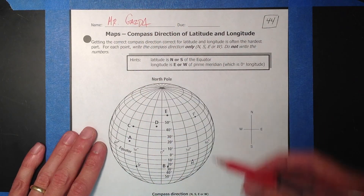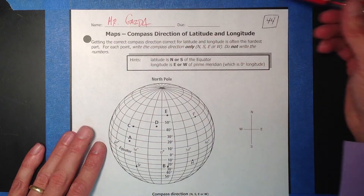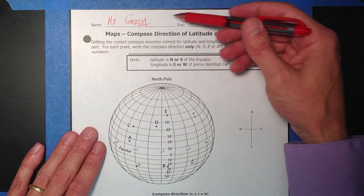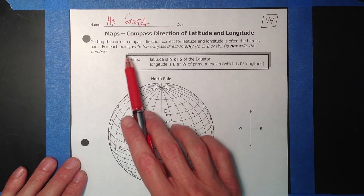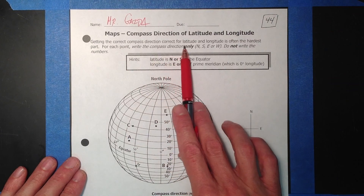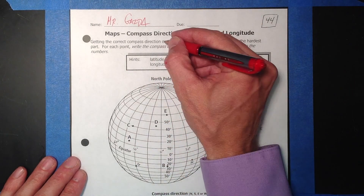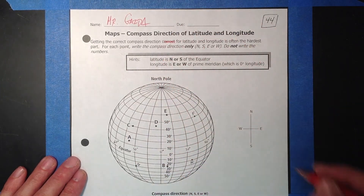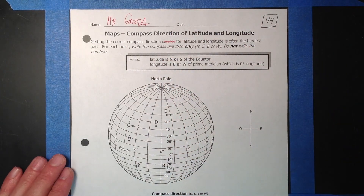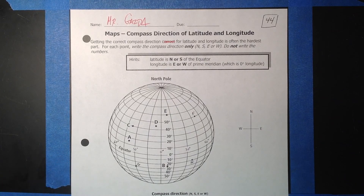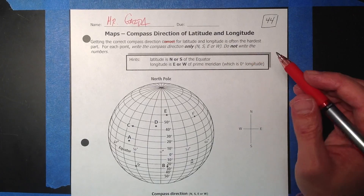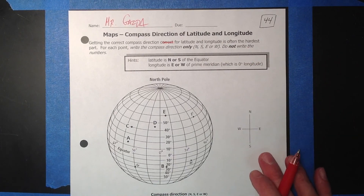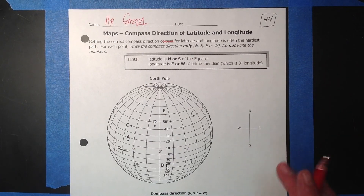Important to read the directions. Dealing with the compass direction for latitude and longitude — getting the correct compass direction. Getting the correct compass direction for latitude and longitude is often the hardest part. Remember, for each point, write the compass direction only, which is going to be north, south, east, or west. Do not write the numbers.